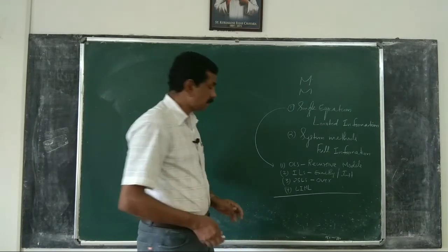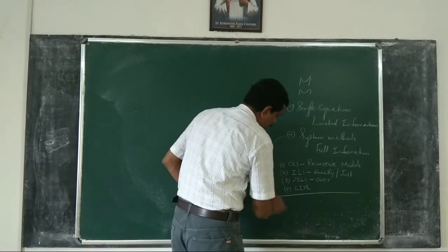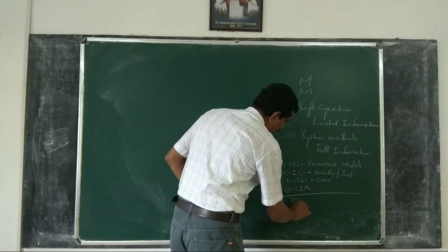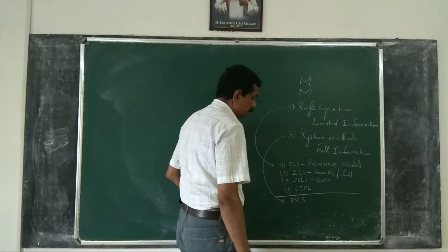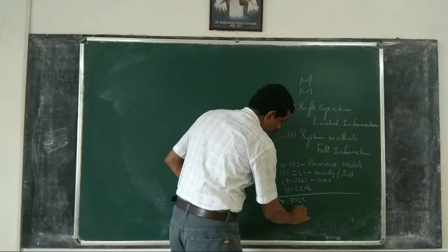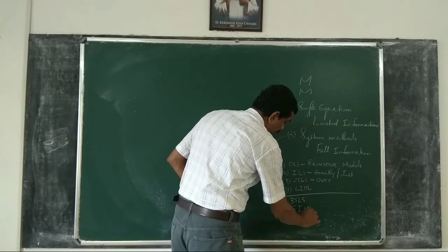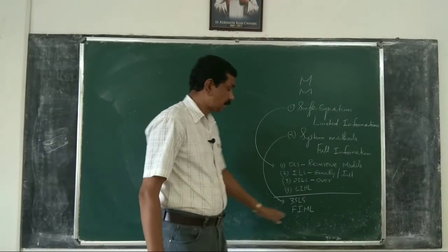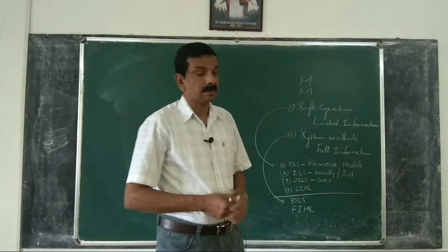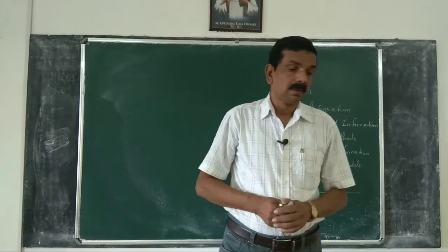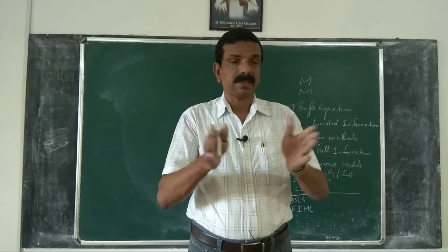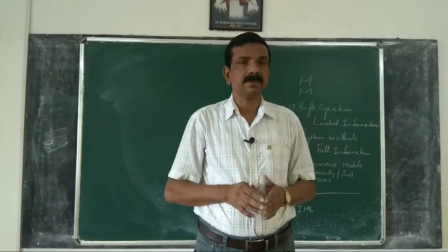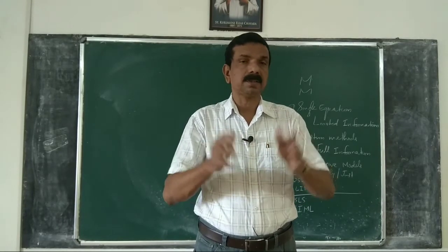Among the system methods, there are two: three-stage least squares and full information maximum likelihood. These are the various methods used for estimating the parameters of a simultaneous equation model.